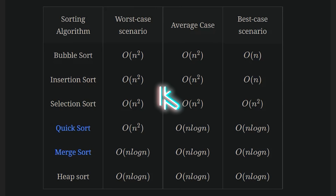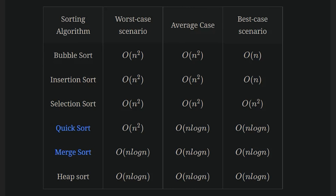Here we have a chart of the sorting algorithms and their respective time complexities from worst case scenario, average case, and best case scenario. What I really want to focus on is the average case. For bubble sort, insertion sort, and selection sort, the average case is going to be n squared. For quick sort and merge sort, the average is going to be n log n. So quick sort and merge sort are considered the fast sorting algorithms, while those top three are the slow algorithms. We're not going to worry about heap sort for this video.